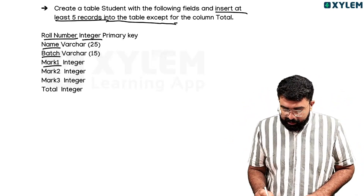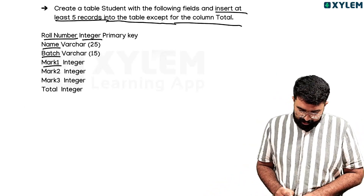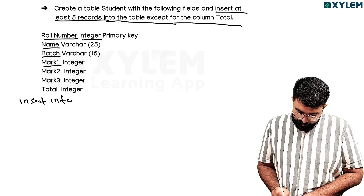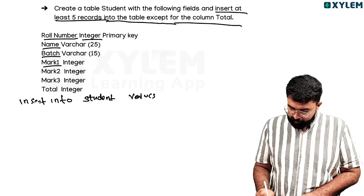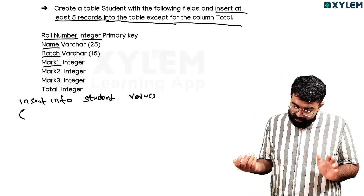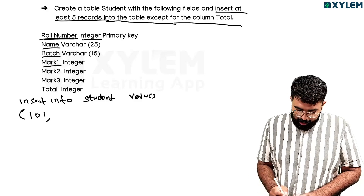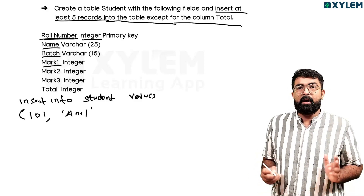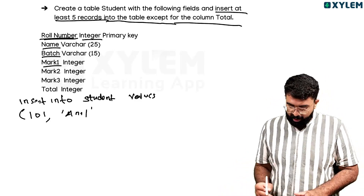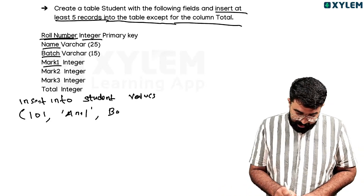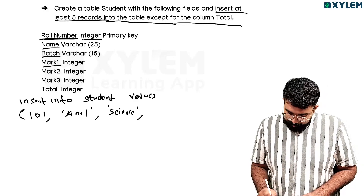Into that table, except for the column 'total' - the total column we will insert later. The INSERT syntax is: INSERT INTO student VALUES. For the column 'number' it is the roll number, then name, then comma, batch.